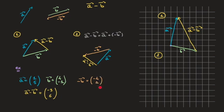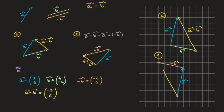Now let's draw A plus negative B. Starting at an arbitrary point, I draw vector A — one unit to the right and five units upward. Then from the head of vector A, I draw the vector negative B: four units to the left and one unit upward. The vector A plus negative B is the vector joining the tail of vector A to the head of negative B — the yellow vector I'm drawing now — which is simply A minus B.